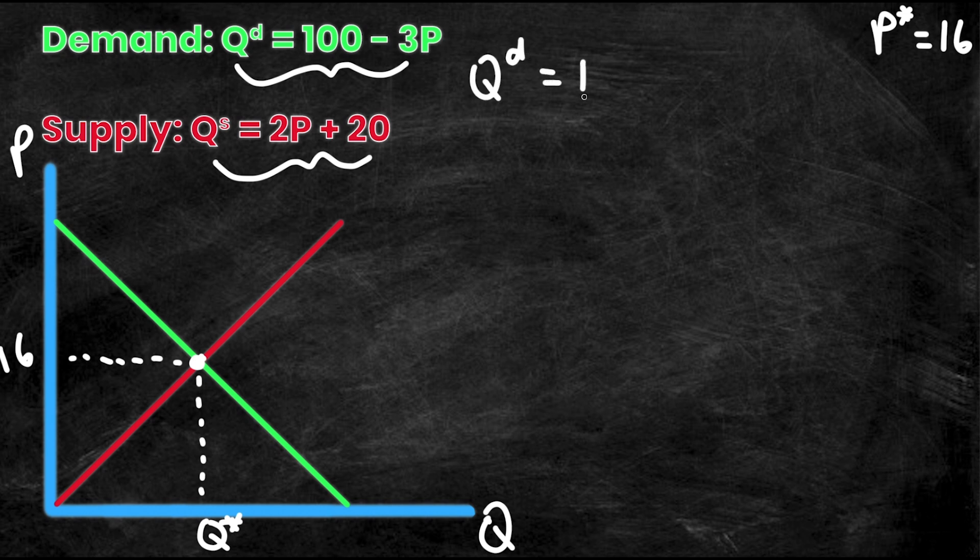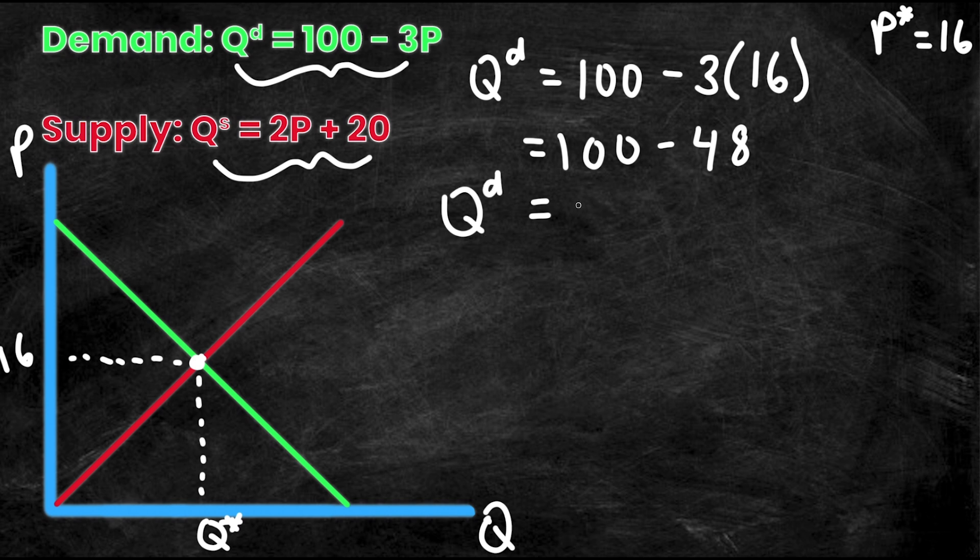So I'll say Qd is equal to 100 minus 3. And then instead of P, I'm going to sub in the P value, which is 16. Now this is simply equal to 100 minus 48. Therefore, Qd is simply equal to 52. Now, I know that this means that Q star is equal to 52. But if you're a little bit skeptical, let's sub it into Qs and see if it also equals 52.